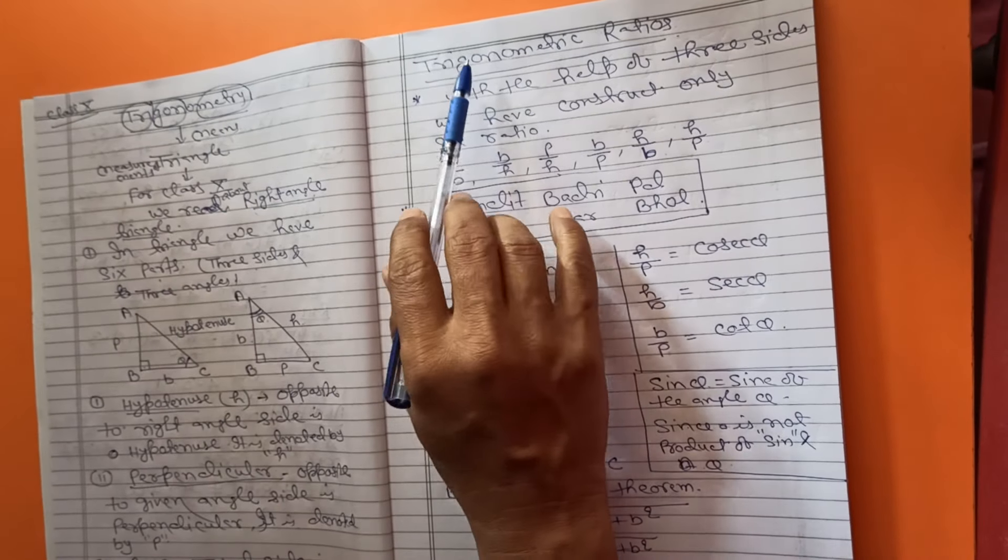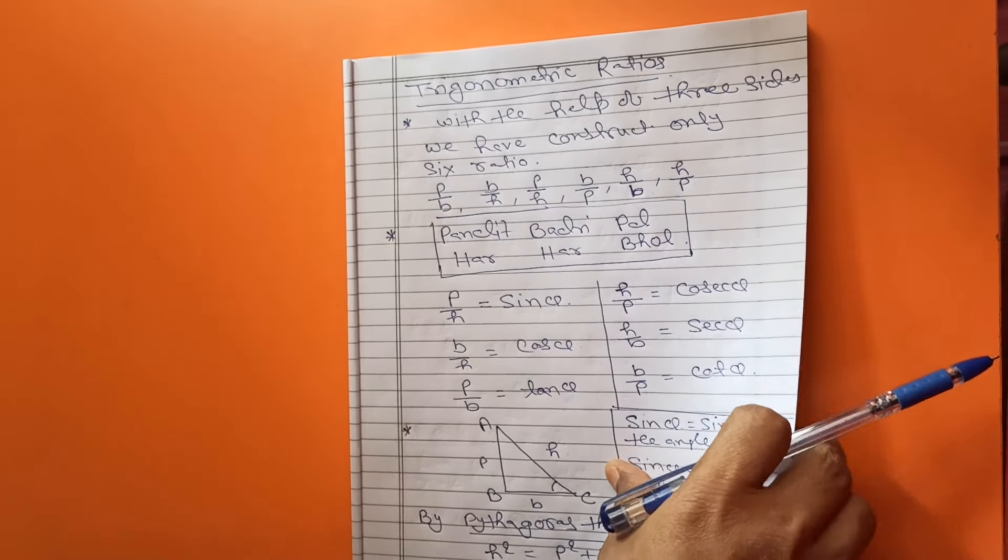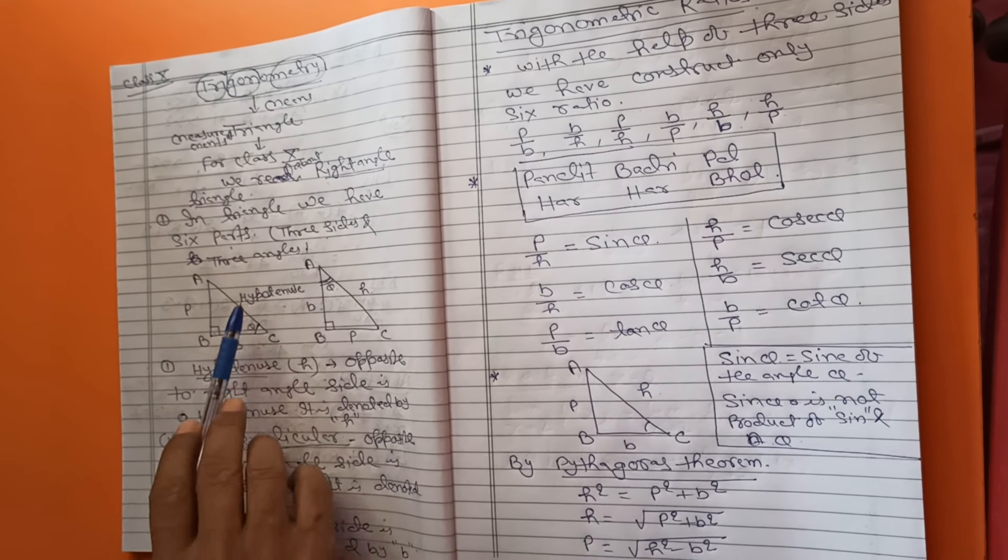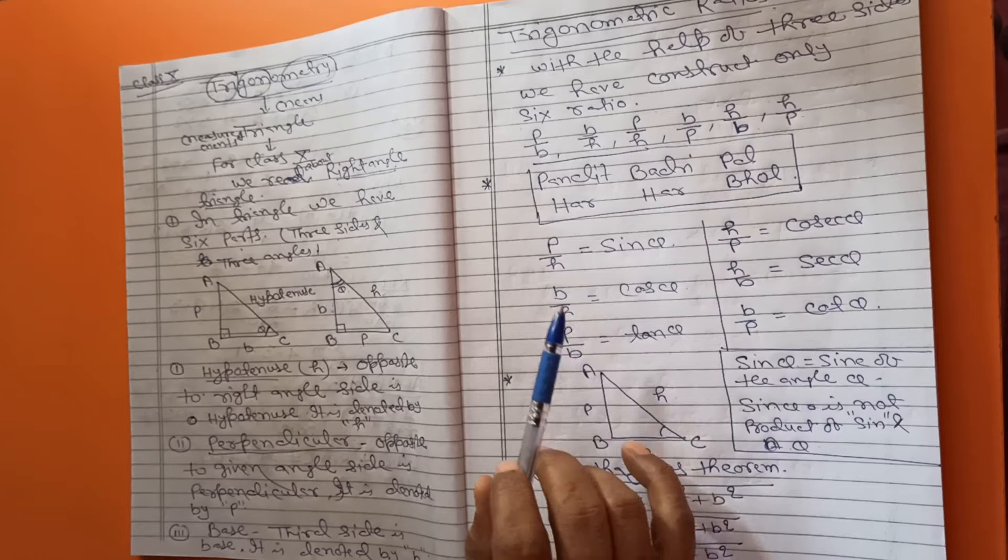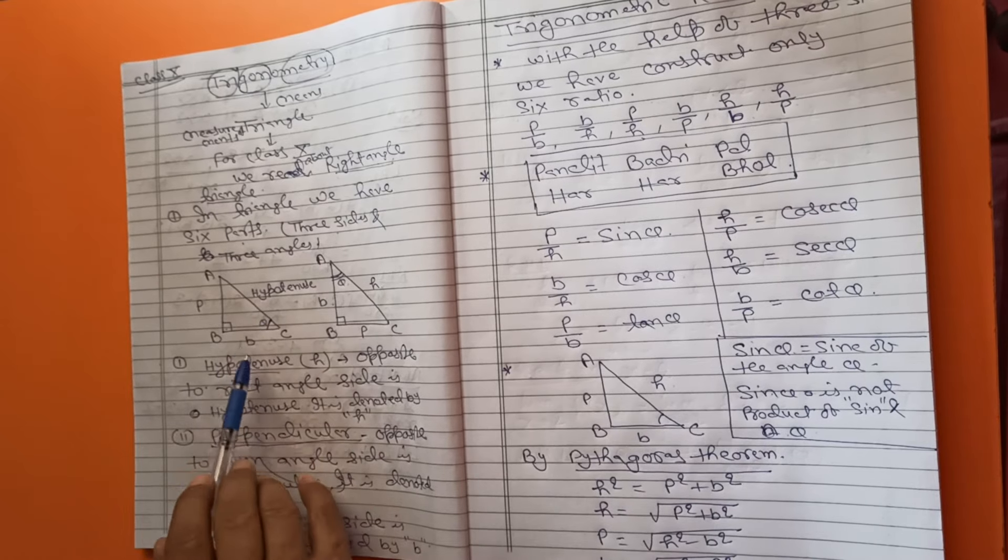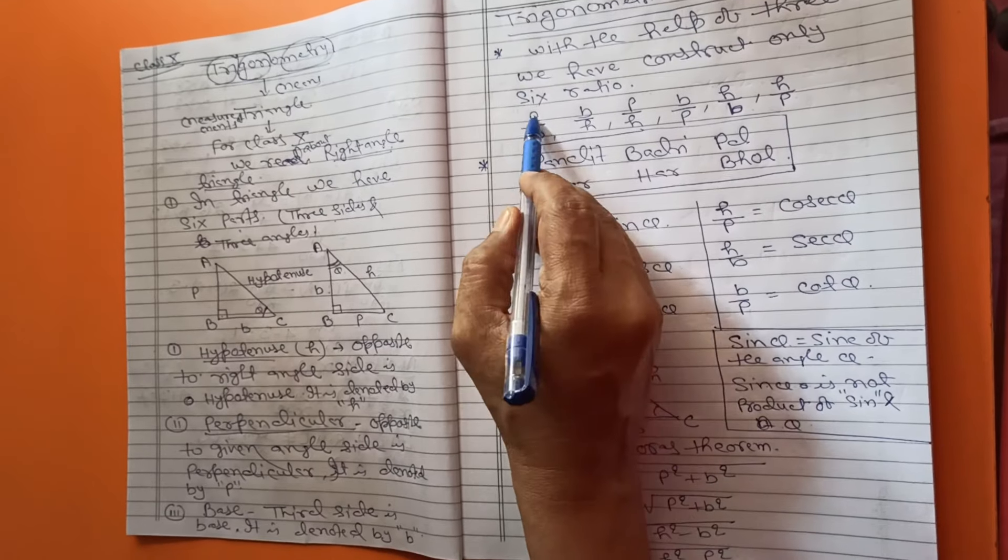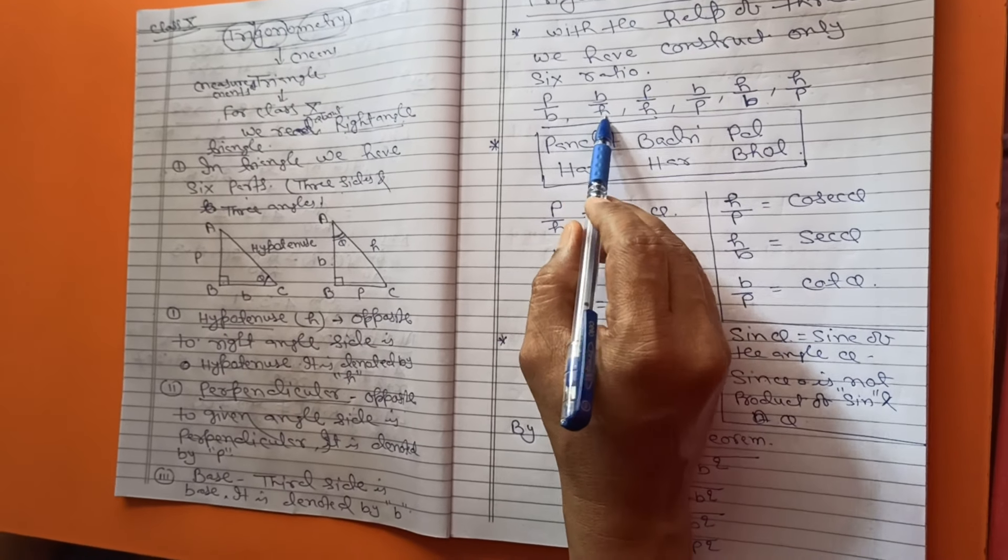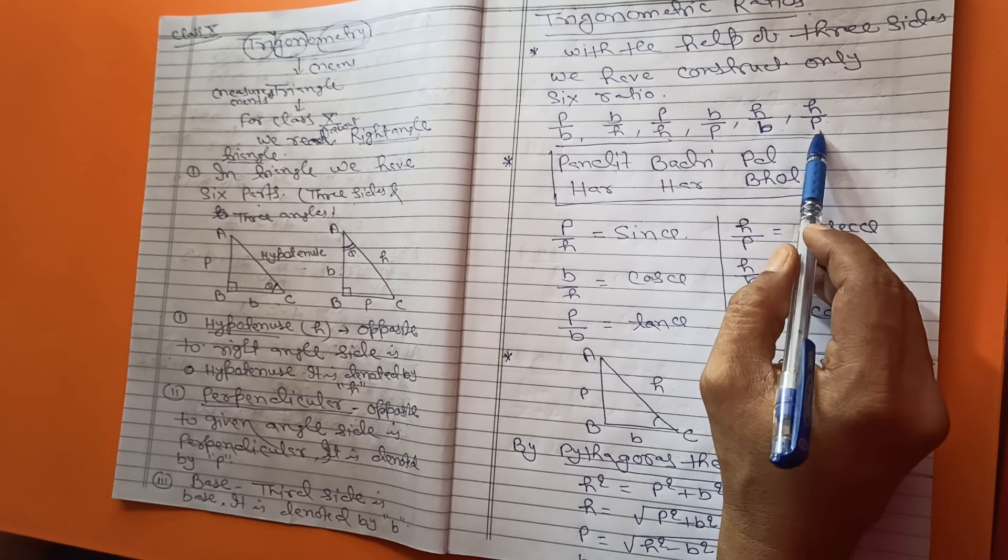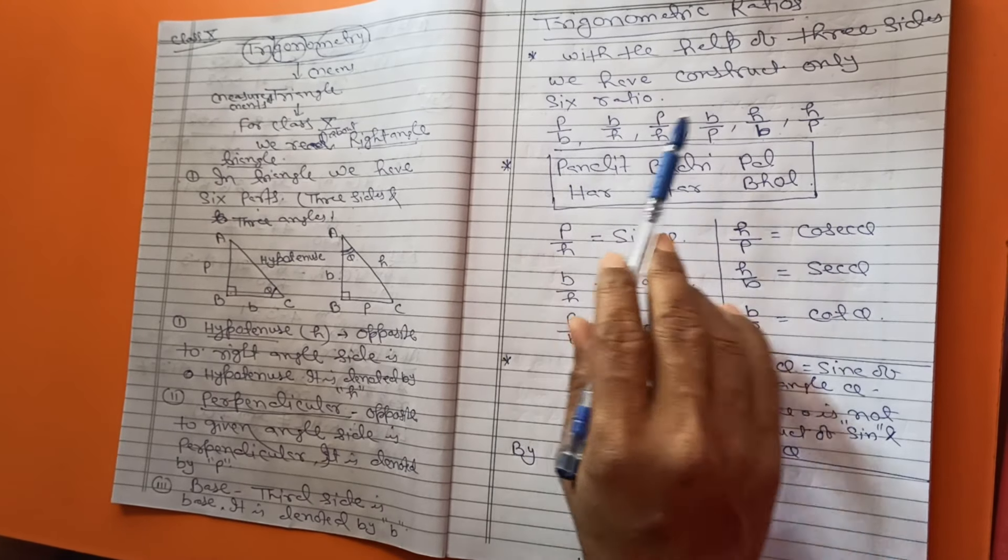Up now, you read trigonometrical ratio. With the help of three sides in right angle triangle, P, B, H, we construct only six ratios. P by H, B by H, P by B, B by P, H by B and H by P. You have not constructed more than six ratios. Only you construct six ratios.